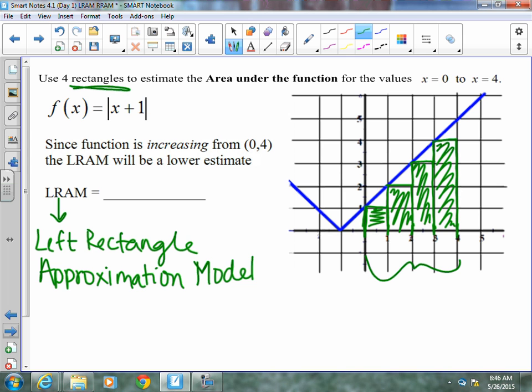Now you could do base times height for each rectangle. If they're full squares, you can count them. Don't count them if they're not full squares. Don't estimate more than the estimation that we're already doing. If you need to, you can find these heights by plugging them into our f of x at 0, 1, 2, and 3. So we end up with an approximate area of 10.